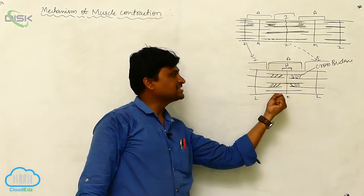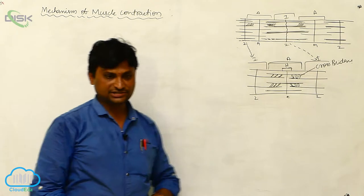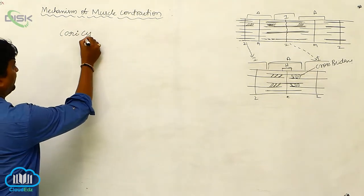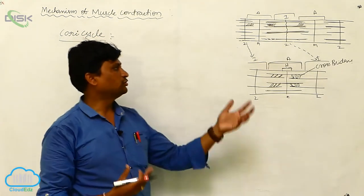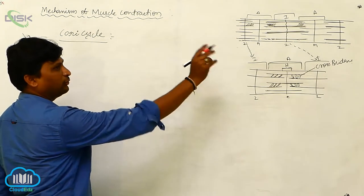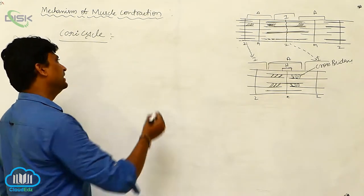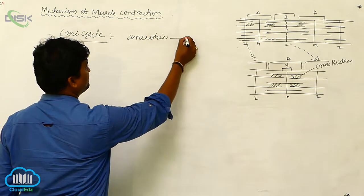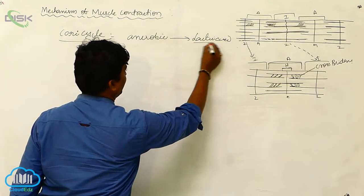This confirms the changes that occur during muscle contraction. Now we are going to discuss about the Cori cycle. The Cori cycle means that muscle continuously shows such type of muscle movement, performed by aerobic respiration in the presence of oxygen. But with scarcity of oxygen, it is performed by anaerobic respiration, which finally results in the formation of lactic acid.